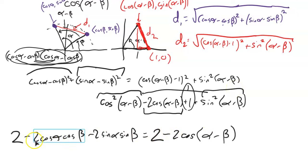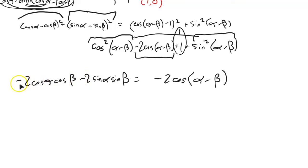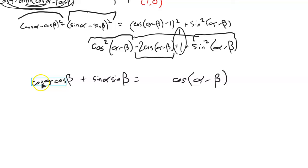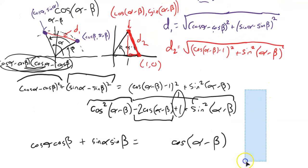I can subtract two from both sides, then notice everything is divisible by negative two. Dividing by negative two: the left gives cosine of alpha minus beta, and the right gives positive cosine alpha cosine beta plus sine alpha sine beta. Here is the relationship — cosine of alpha minus beta equals cosine alpha cosine beta plus sine alpha sine beta. Notice it's the opposite operator: the minus in the angle becomes a plus.